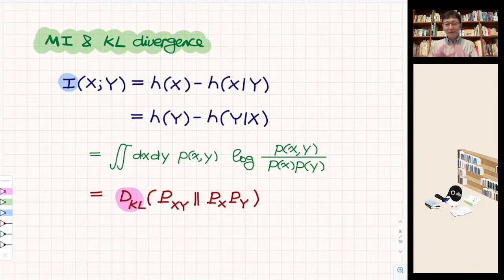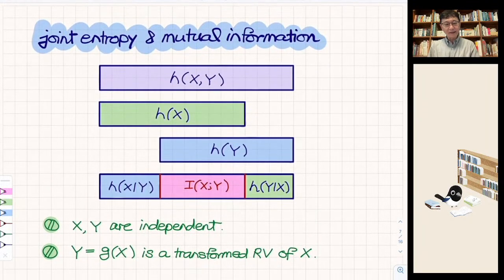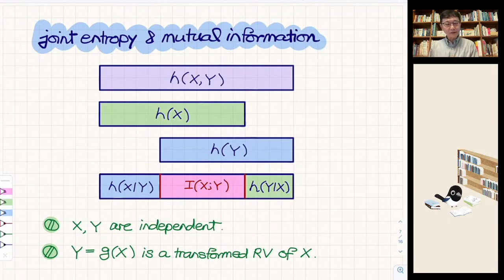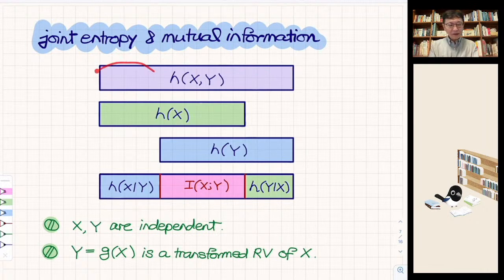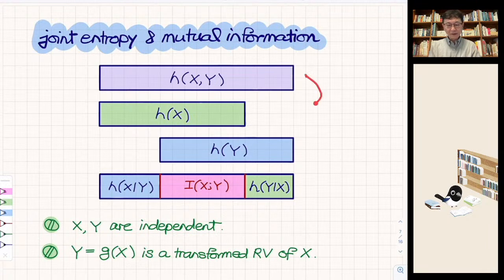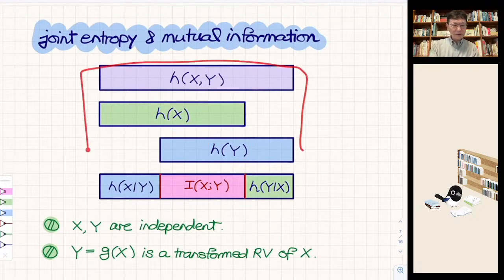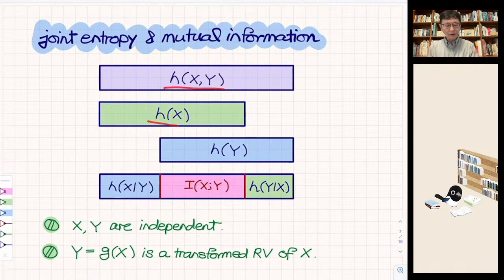Now let's summarize with a simple diagram. For the joint probability density function, we have the joint differential entropy H(X,Y), which is larger than H(X) or H(Y) in general — a system with two random variables is more uncertain than one with a single random variable. This gives us the inequality: H(X,Y) ≥ H(X) and H(X,Y) ≥ H(Y). The information conveyed is basically the same as the uncertainty of the system.